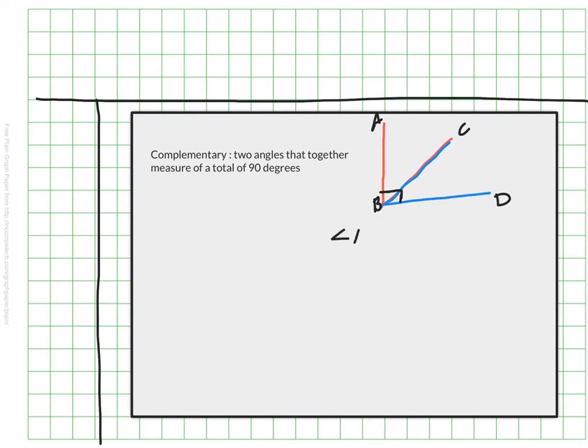Which brings us to our last bit of vocabulary for this video. And that's the vocabulary we use when we look at angles as a pair. Two angles are considered complementary when they add up to a total of 90 degrees. So in this case, our complementary angles that we're looking at would be angles ABC and angles CBD. When you combine them together, they make this 90 degree angle that I've indicated here.